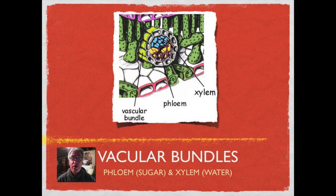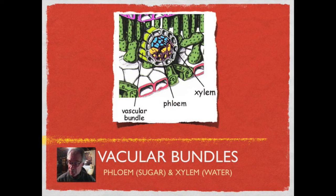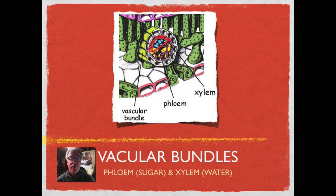The phloem tends to be the slightly larger vessels, while the smaller ones are the xylem. You can see in this particular picture — I believe it's a dicot — the upper portions are the xylem, which moves water because they are smaller vessels, whereas the larger ones, the phloem, are moving things like sugars and glucose.